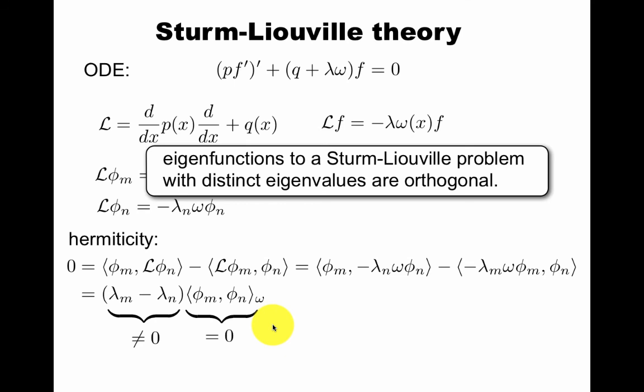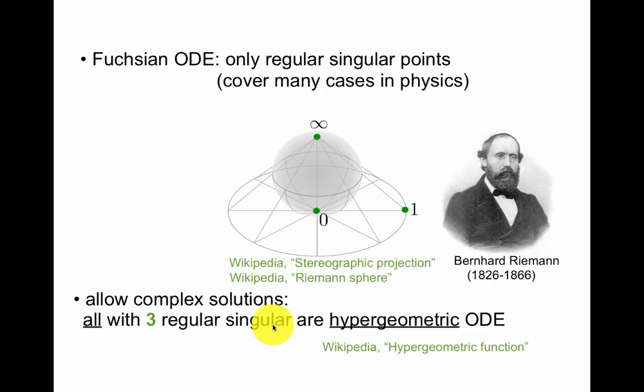In more interesting cases, like in cylindrical coordinates, you can get a more complicated function of the radius. That's called a Bessel function. And that falls in a general class that is related at least to Fuchsian ODEs. Fuchsian ODEs means only regular singular points. You can look that up if you don't know the definition. That covers many cases in physics.